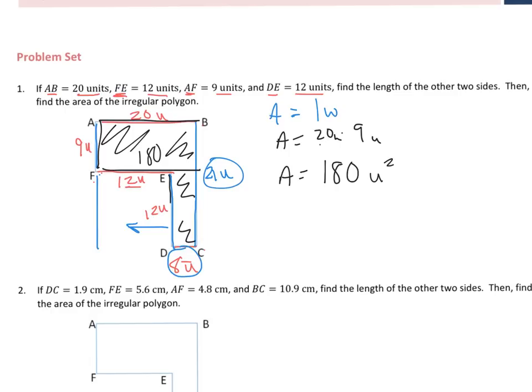And then my other piece, I'm looking right here, which is 12. And then my new dimension, which is 8. And I'm going to rewrite my formula. Because I want to show which formula I'm using. 12 times 8 is 96 units squared.